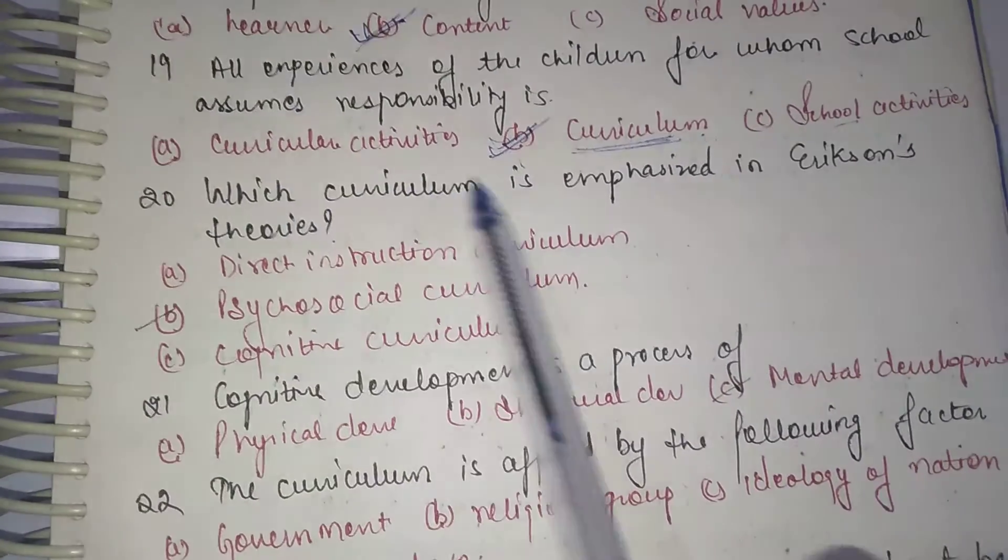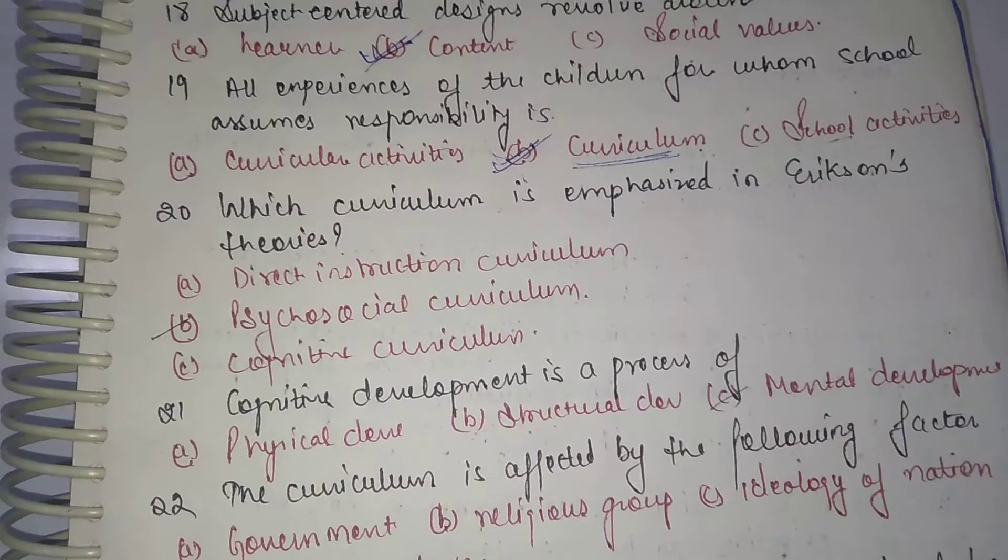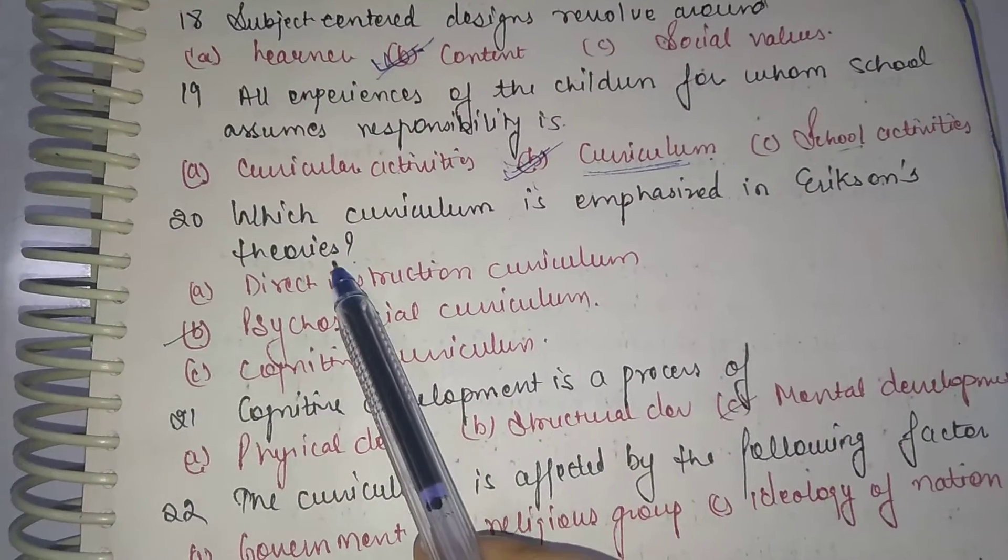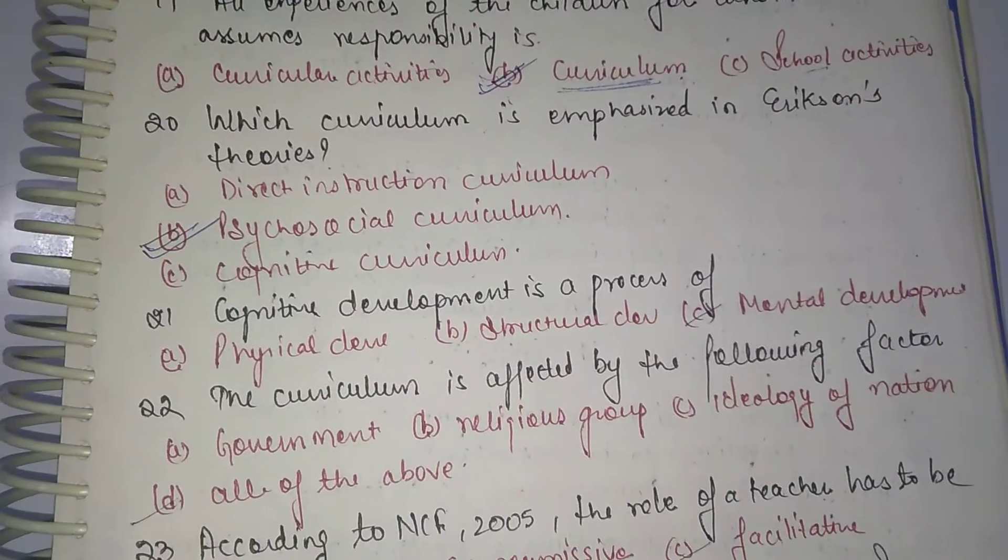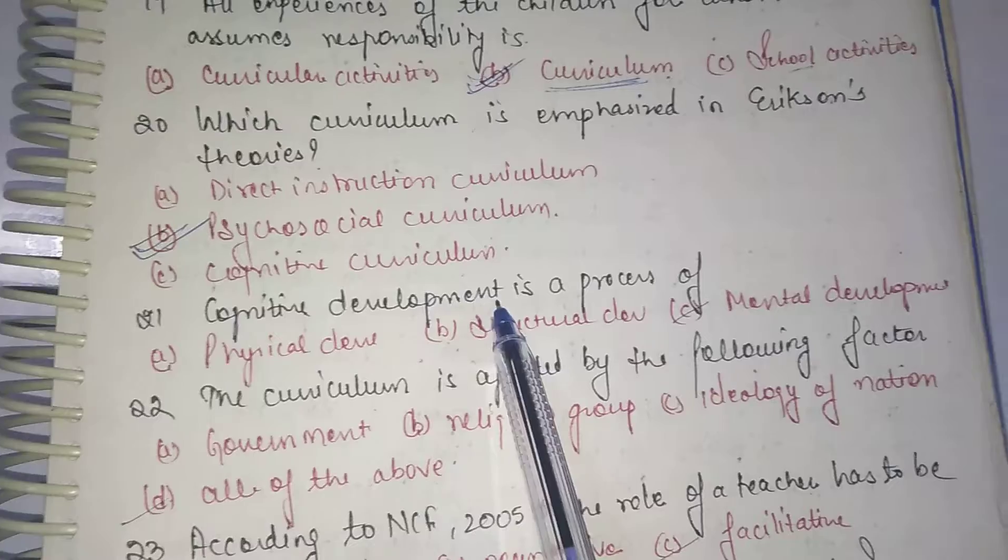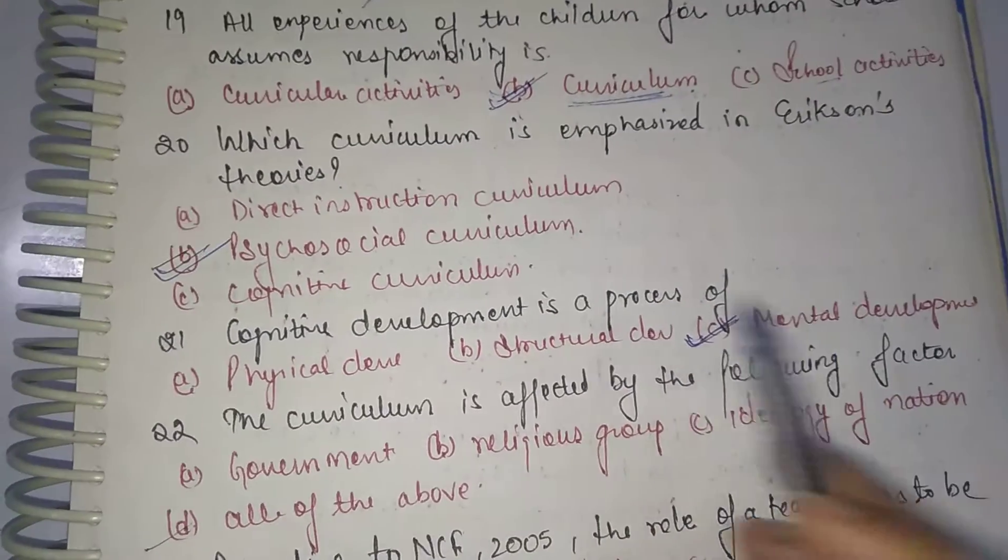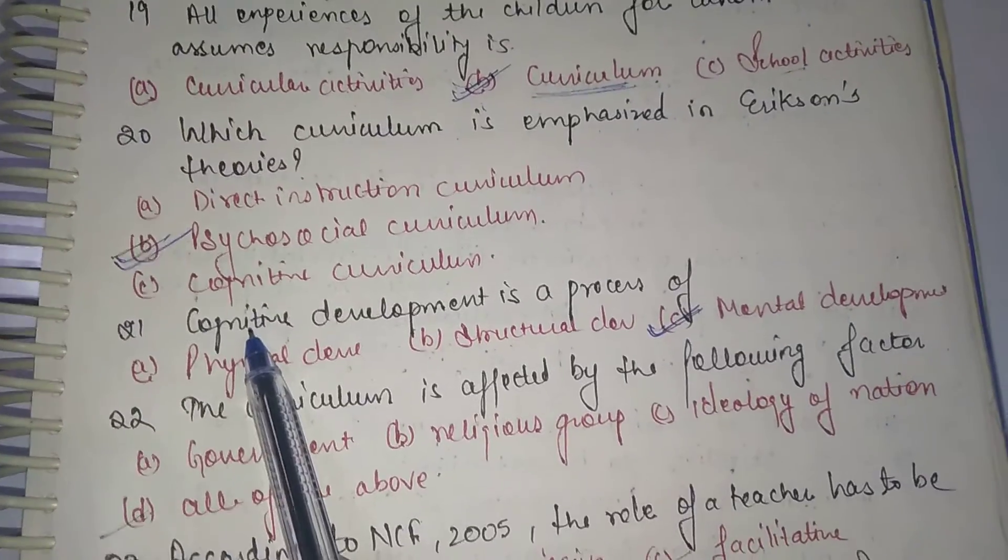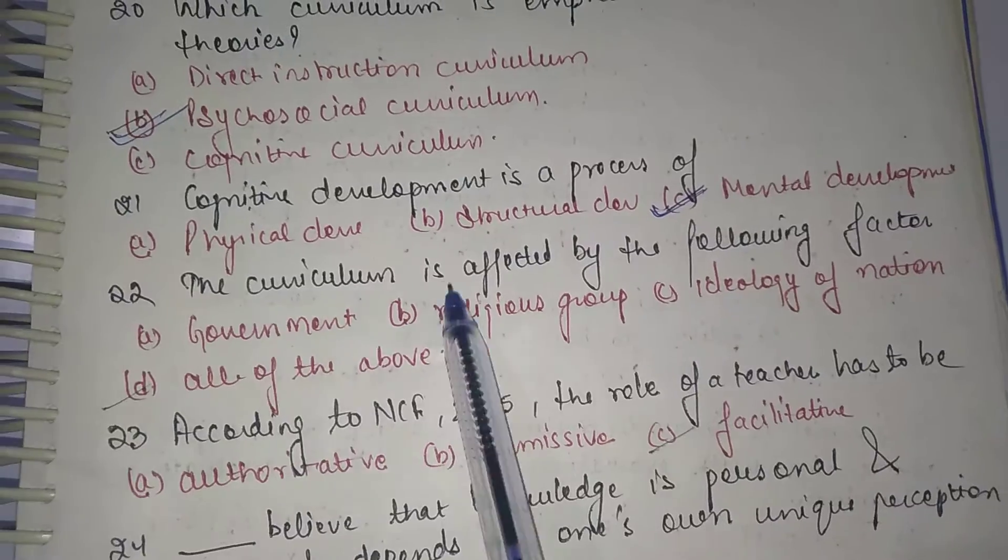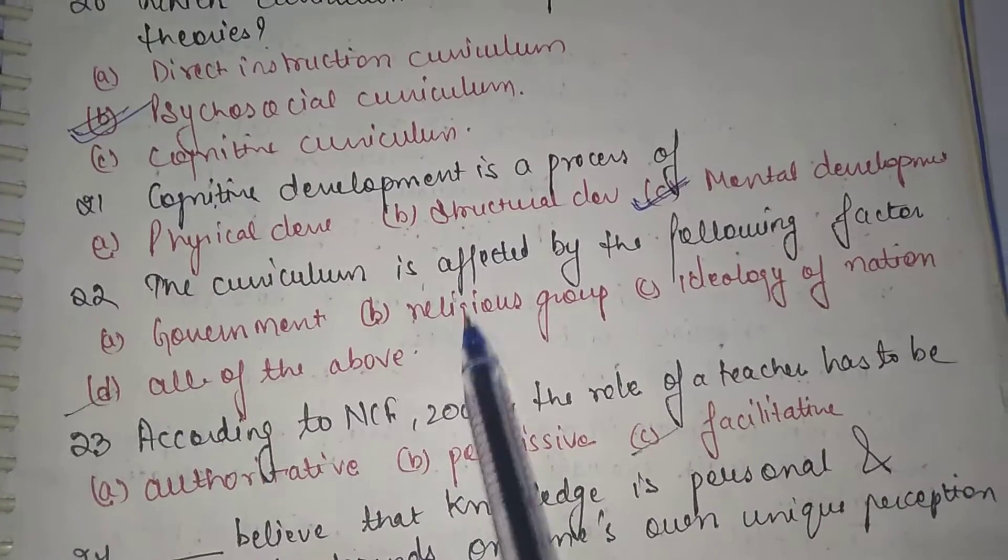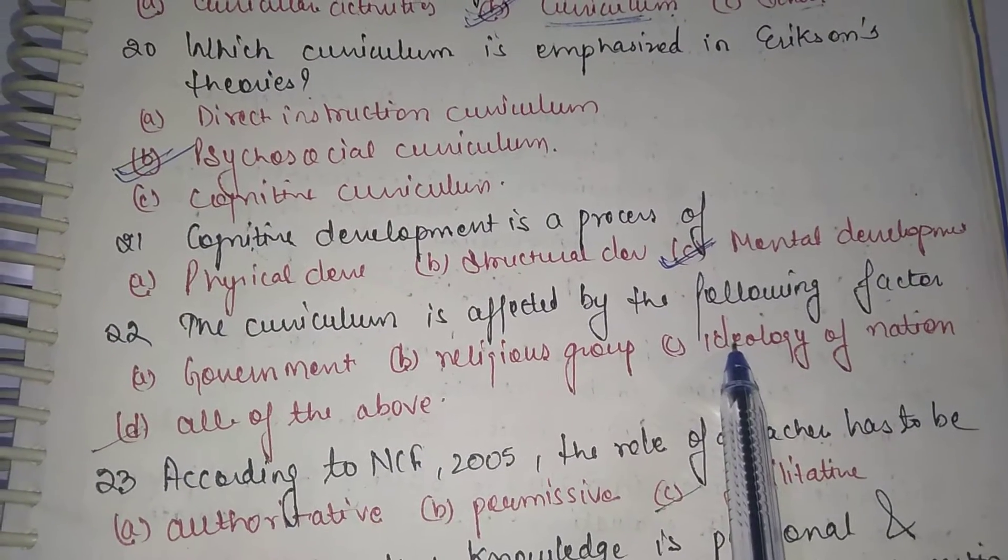Which curriculum is emphasized in Erikson's theory? It was psychosocial curriculum. The next is: Cognitive development is a process of mental development. The next is: The curriculum is affected by the following factors - government, religious group, ideology of nation. So the correct option is all of the above.